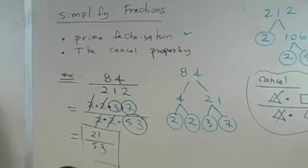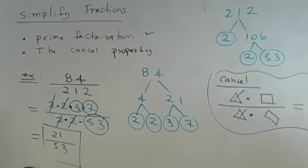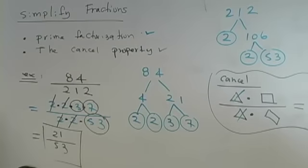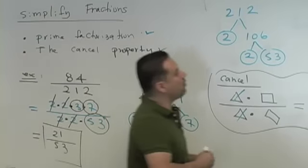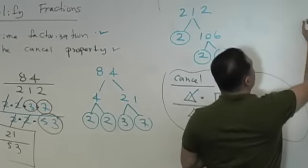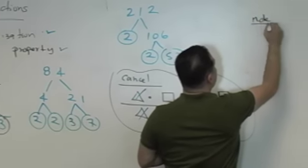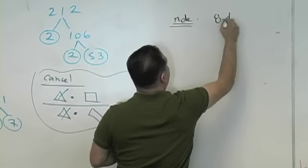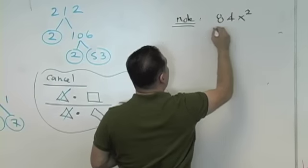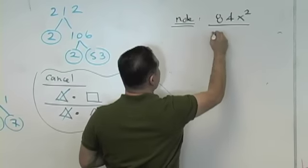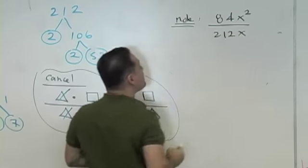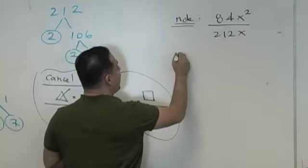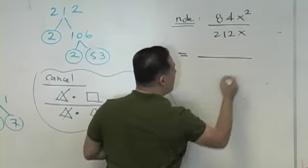Does anybody have any questions on what we just did? Isn't that what we worked on Monday? Just to kind of warm you up, wake you up. What if you had to simplify 84x² over 212x? What if we had some variables along with our numbers?